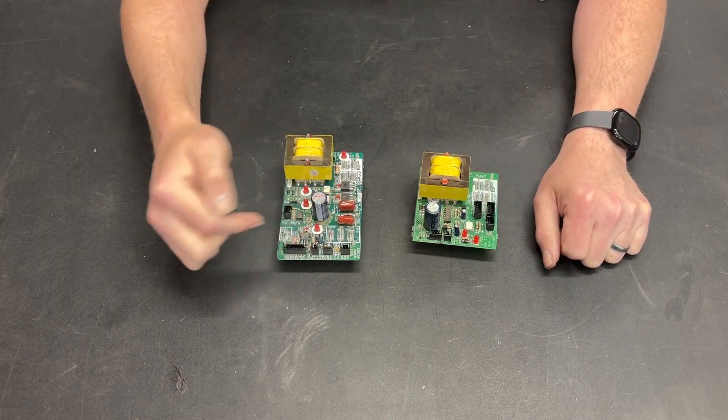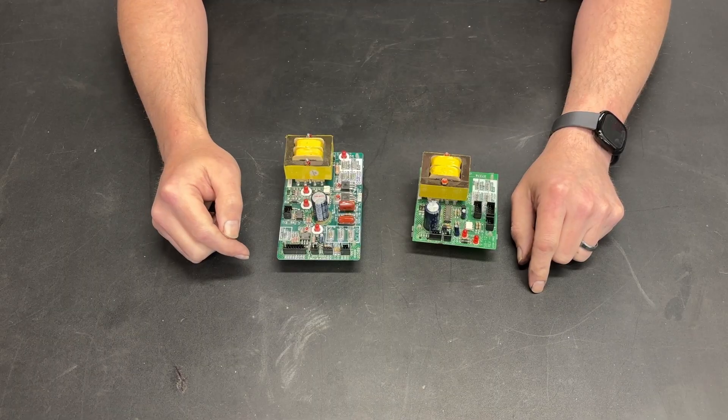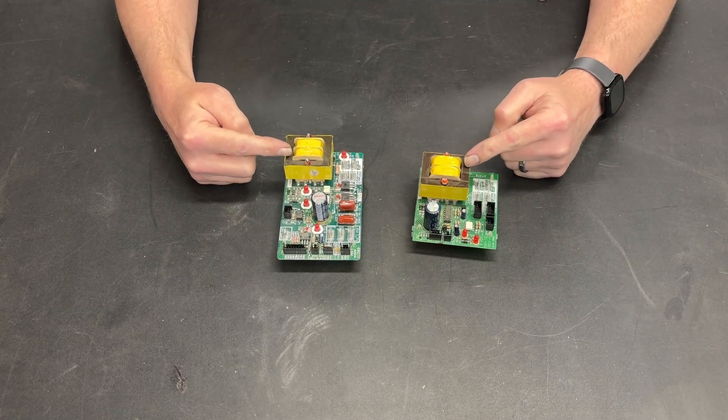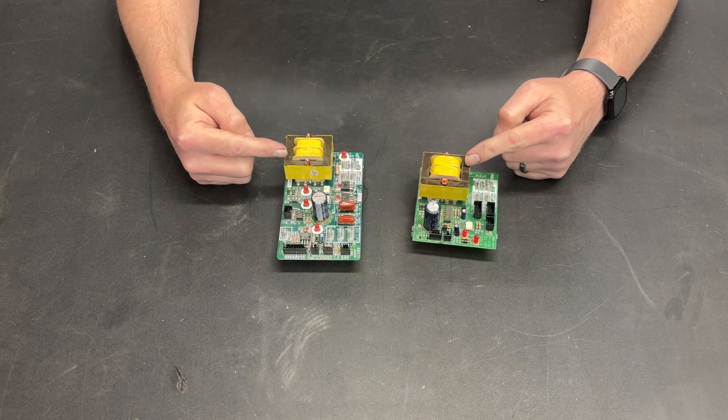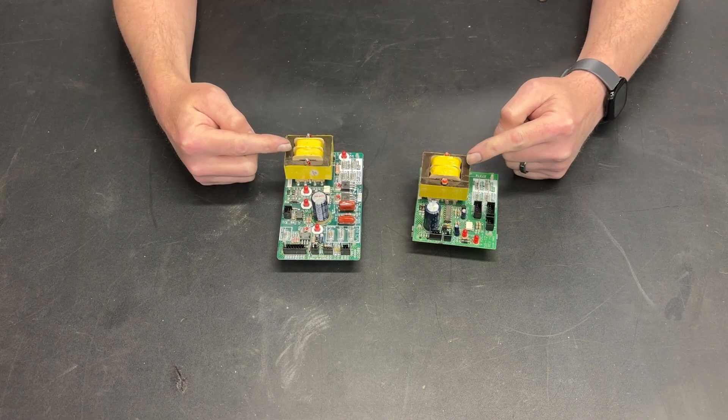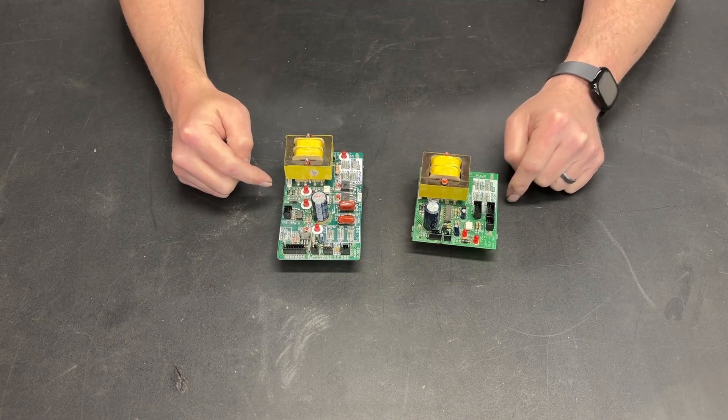One thing they do with these three terminals here and I believe it's this bank here is to control the incline motor on said treadmill. But what else do they do? Well this is a transformer and it's designed to convert AC voltage of one voltage down or up to a different voltage.